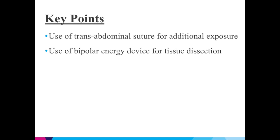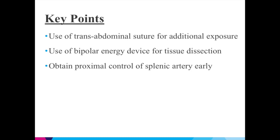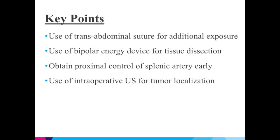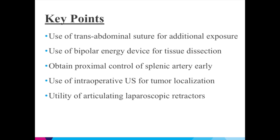The use of a bipolar energy device for tissue dissection is very helpful. It is important to obtain early proximal control of the splenic artery. The laparoscopic ultrasound is a useful tool for tumor localization and defining anatomy. Additionally, articulating laparoscopic retractors help facilitate the dissection. There are multiple methods available to control bleeding; however, in the case of refractory bleeding, assess the need for splenectomy or conversion to an open procedure.